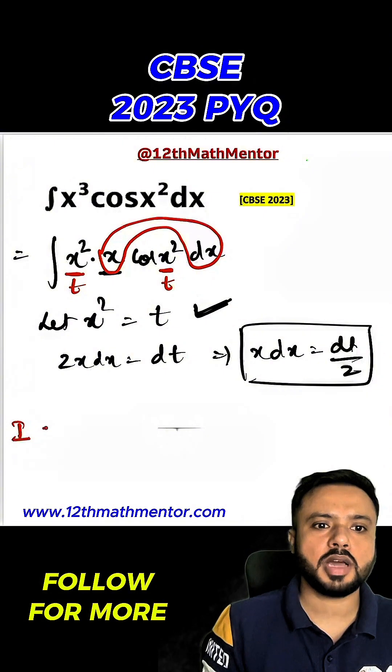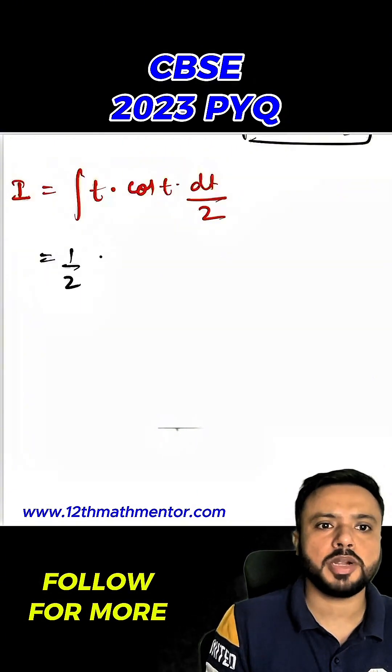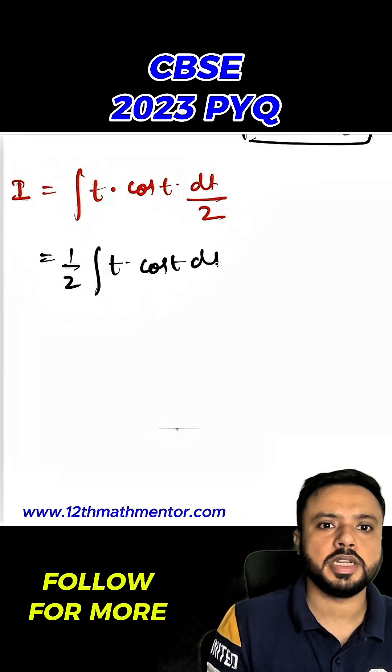So I can rewrite the integral in terms of t as t times cos t times dt upon 2. I will take this 1/2 out. So 1/2 integral of t cos t dt.